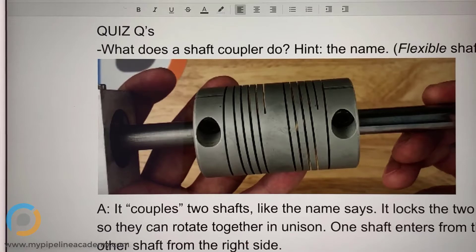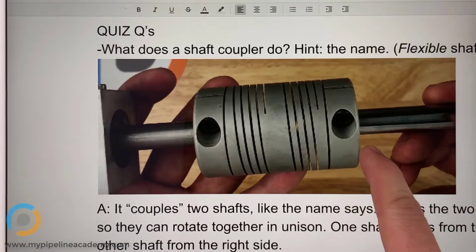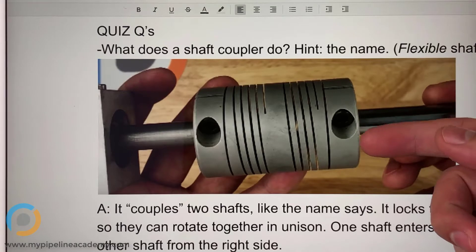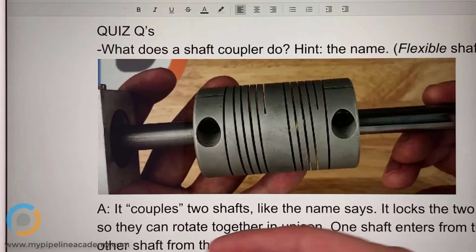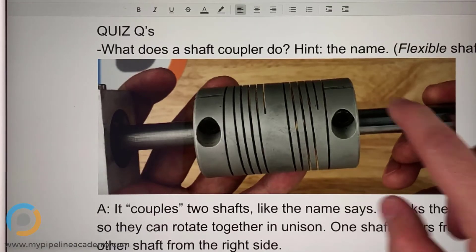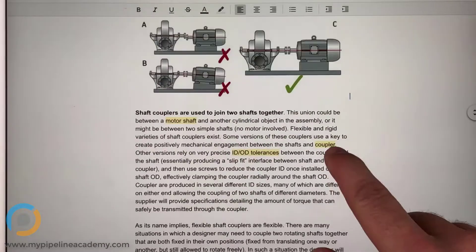And that scenario is usually only valid when one of the two shafts can be allowed to float, so that second shaft can find concentricity with the other one, and it is not externally constrained by something else. So if you have two shafts that are constrained, let's maybe just go here.